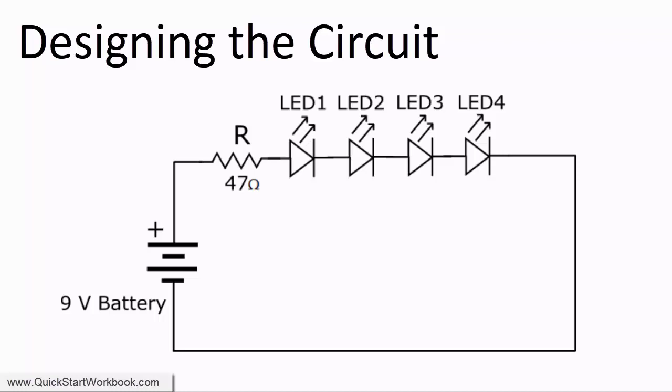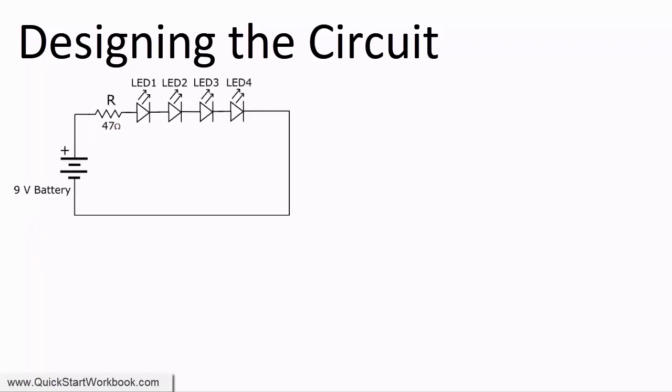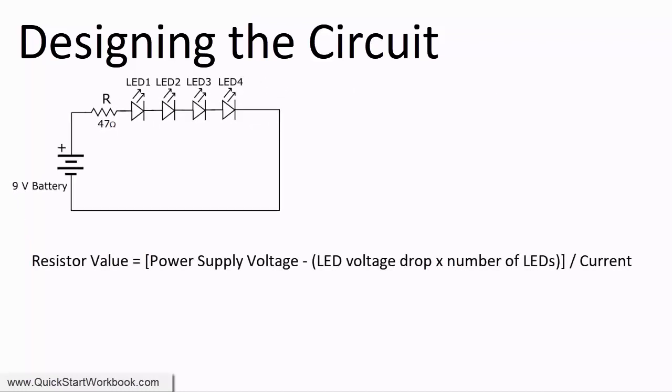But how do we know that a 47 ohm resistor is the correct size to use? We can use Ohm's law, assuming a voltage drop of about 2 volts per LED and a current of 20 milliamps, which is about what LEDs require to operate correctly. With a supply voltage of 9 volts, we get 50 ohms.